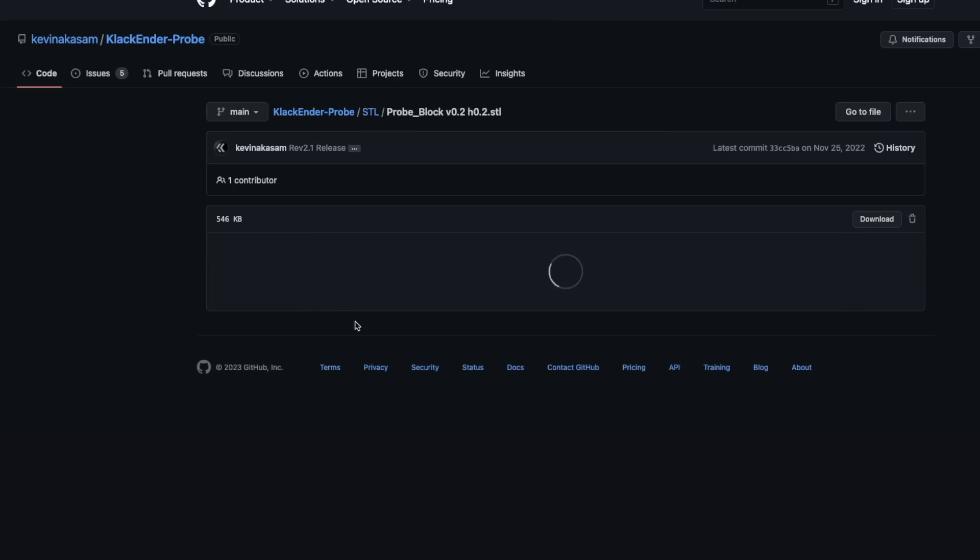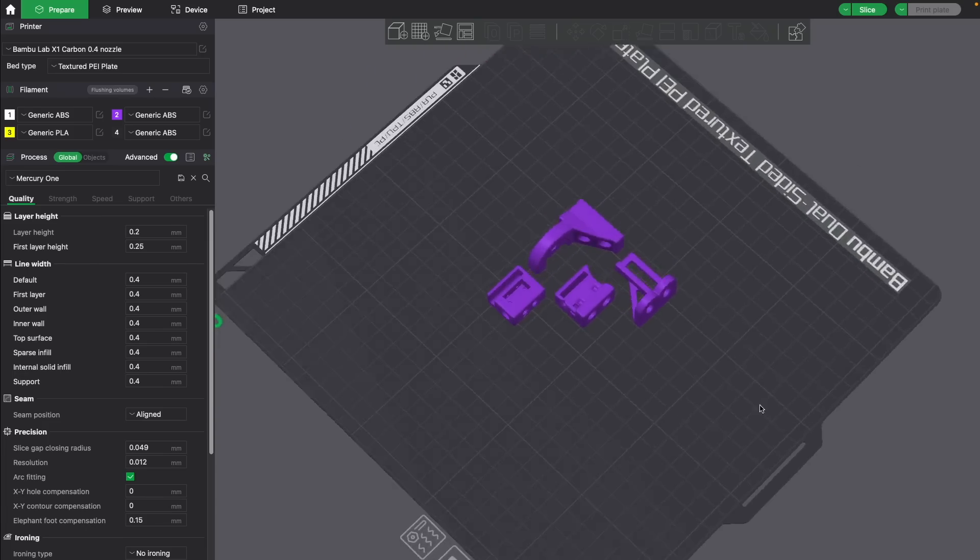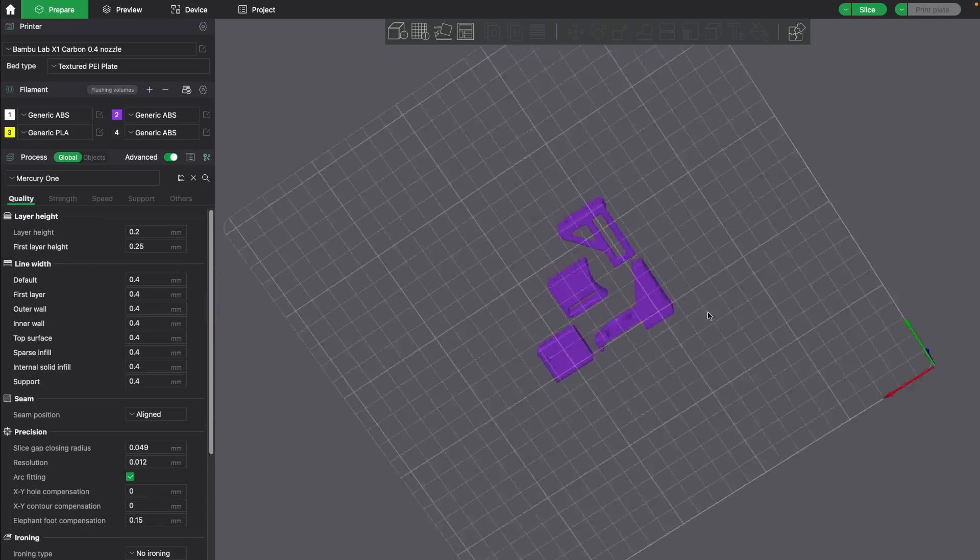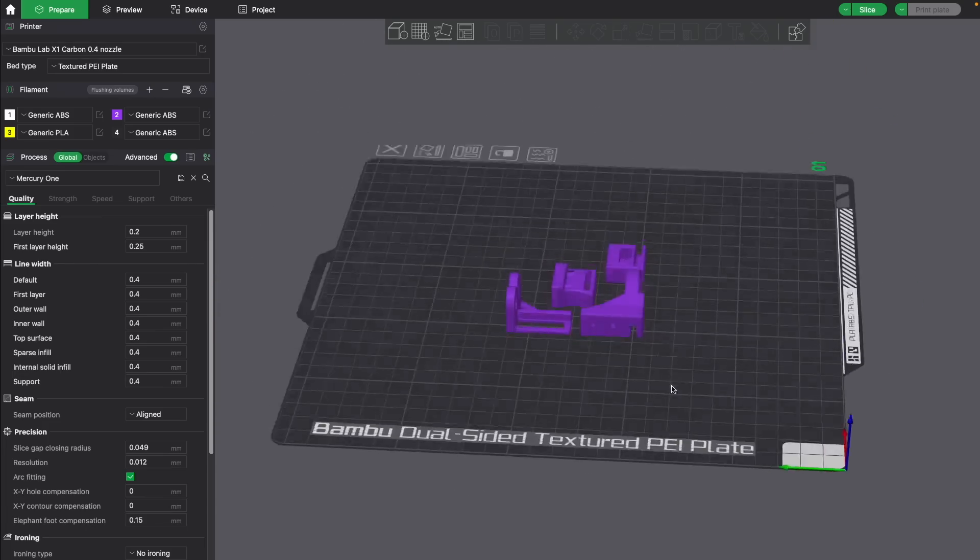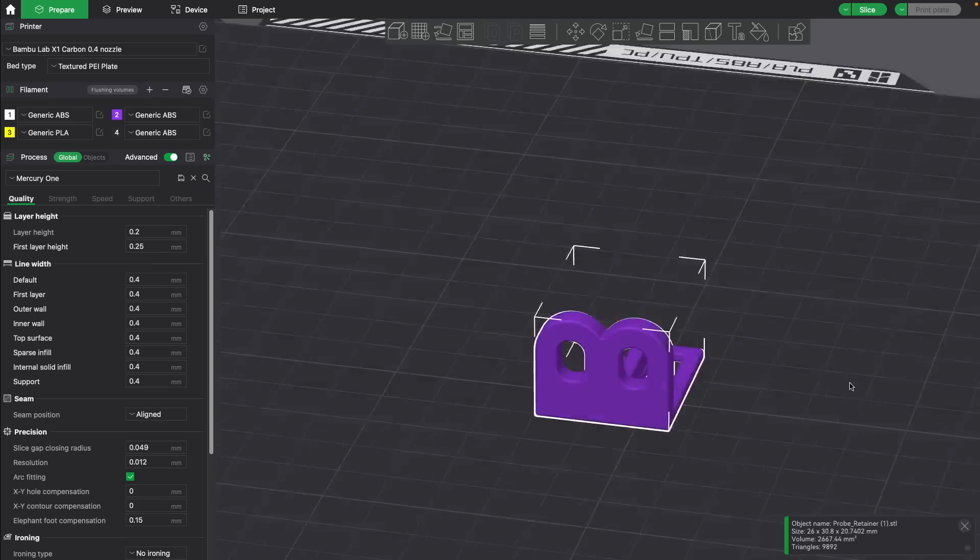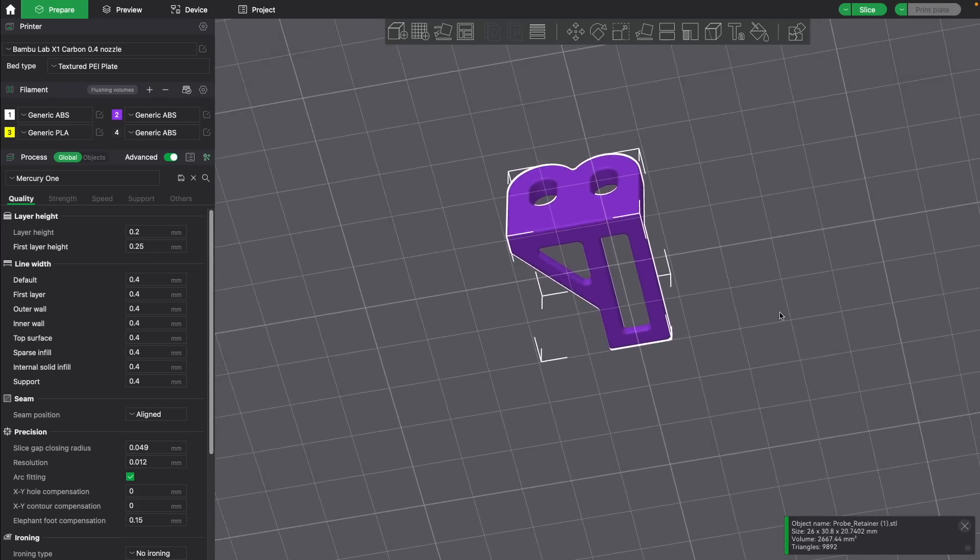You will also need to print out a few parts. Every clicky probe will have at least three parts, which is the dock, the probe block containing the switch, and the probe mount. The Clack Ender has one extra part called the probe retainer.